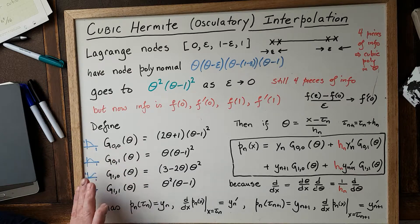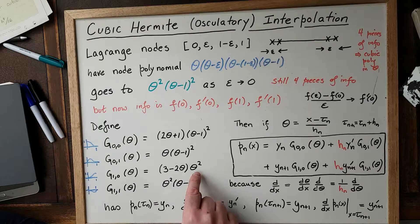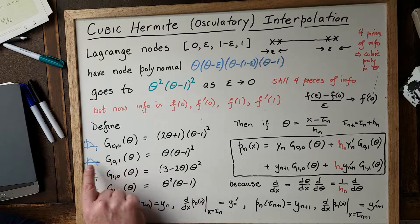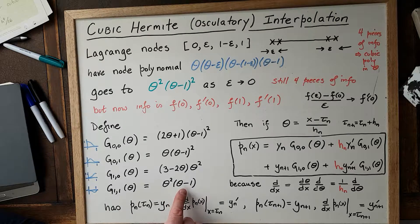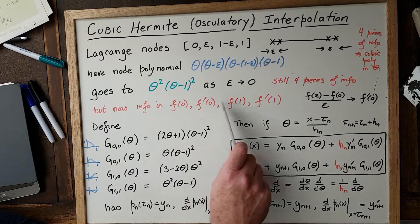G₁,₀ is just like G₀,₀ except flipped around — zero and flat at theta equals zero, and value 1 and flat at theta equals one. You need to check that the derivative at theta equals one is zero. Plugging theta equals one in gives 1 times (3 − 2) = 1, so the function value is 1 there. G₁,₁ is analogous to G₀,₁ but negative, and its slope at theta equals one is exactly +1, with value zero and flat at theta equals zero. These four cubic polynomials allow us to do cubic Hermite interpolation given those four pieces of information.